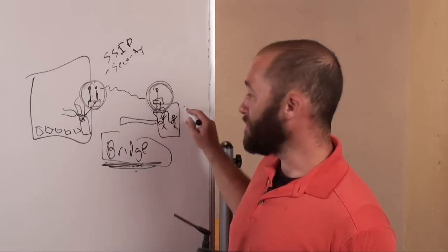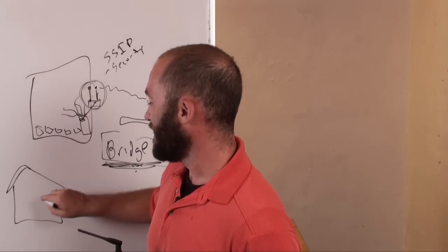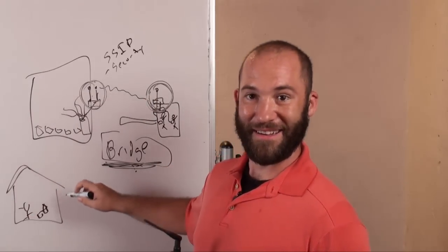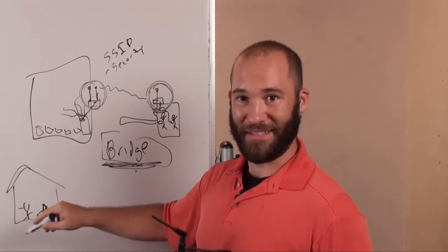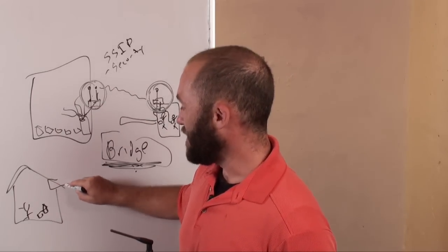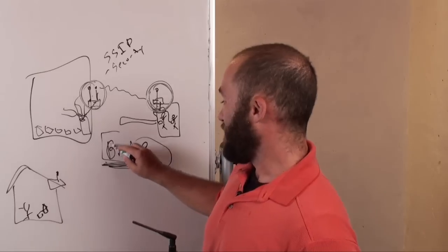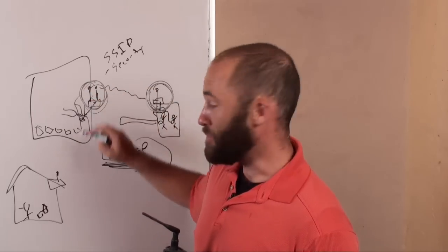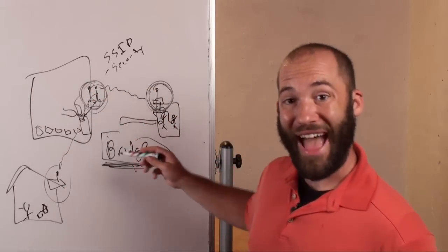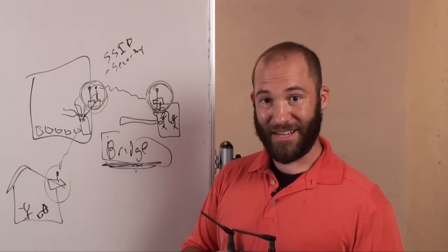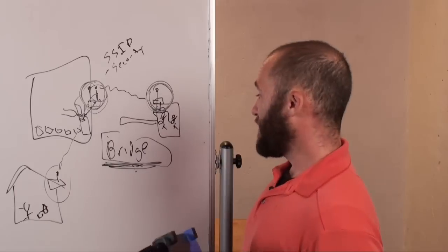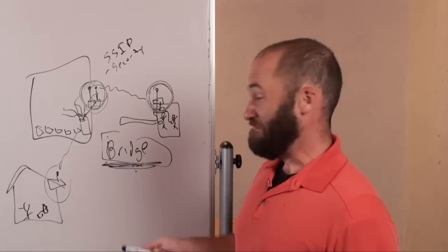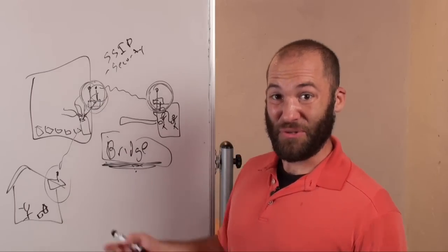You can do this for multiple buildings. Say you have another building — a childcare facility. You put up another wireless access point, put it into bridge mode, give it the MAC address of the main router or access point you're trying to connect to, and it will connect. That's basically what you do to create a bridge network. This works really, really well. I've used this in classroom environments and for different kinds of buildings. It's all easy to do — you don't have to run any cables.